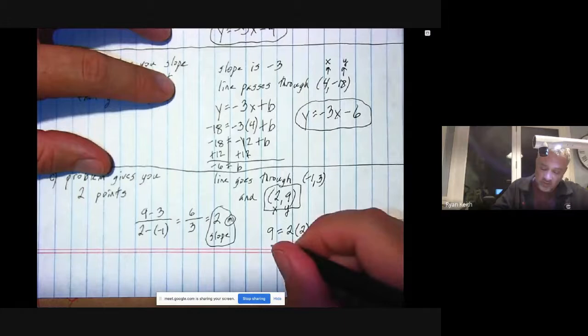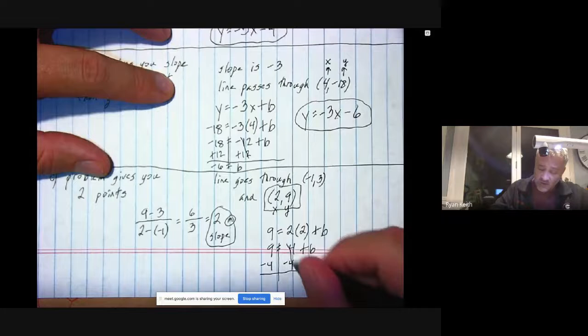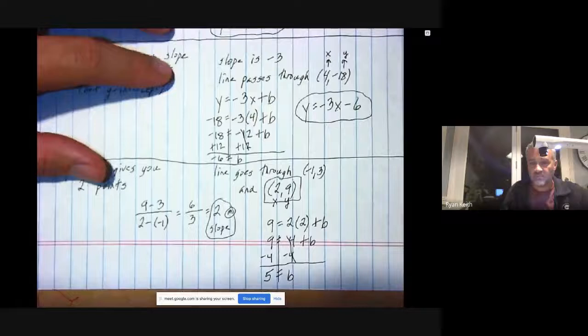2 times 2 is 4. One little simple algebra step of subtracting 4 from both sides, and we learned that b equals 5.